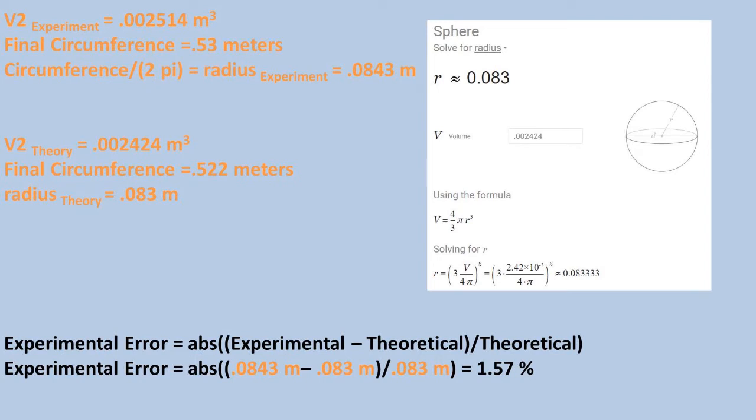We could use circumference experimental and circumference theoretical, but being these are both multiplied times two pi, it can be simplified to radius. We get an experimental error of 1.57 percent.